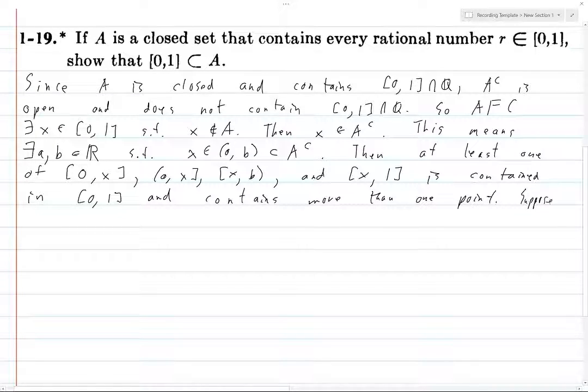So suppose, without loss of generality, let's say X to B is such a set. I.e., the half-open interval from X to B is contained in the interval from 0 to 1, and it contains more than one point.